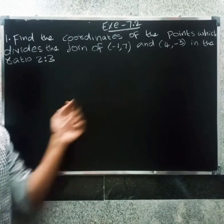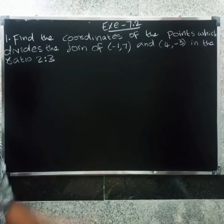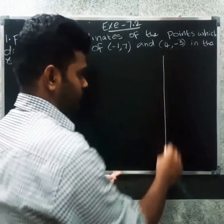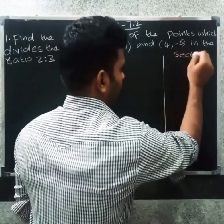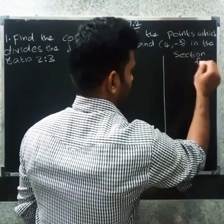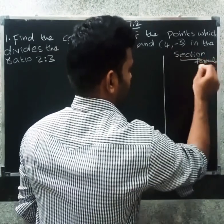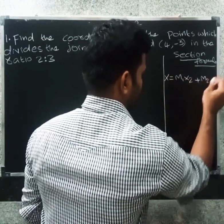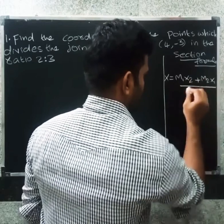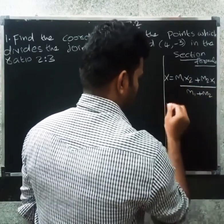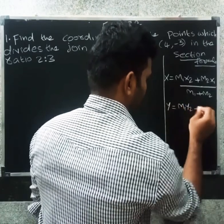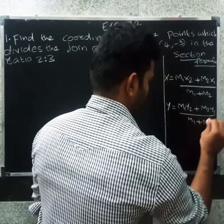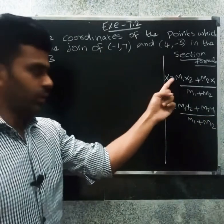This is the section formula. The section formula is: x = (m1·x2 + m2·x1) / (m1 + m2), and y = (m1·y2 + m2·y1) / (m1 + m2).